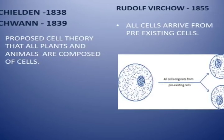Rudolf Virchow, in 1855, further expanded the cell theory by stating that all cells arise from pre-existing cells. As shown in the image, from one cell, by division, two daughter cells are formed. These two daughter cells are further divided into four daughter cells. This theory was given by Rudolf Virchow.